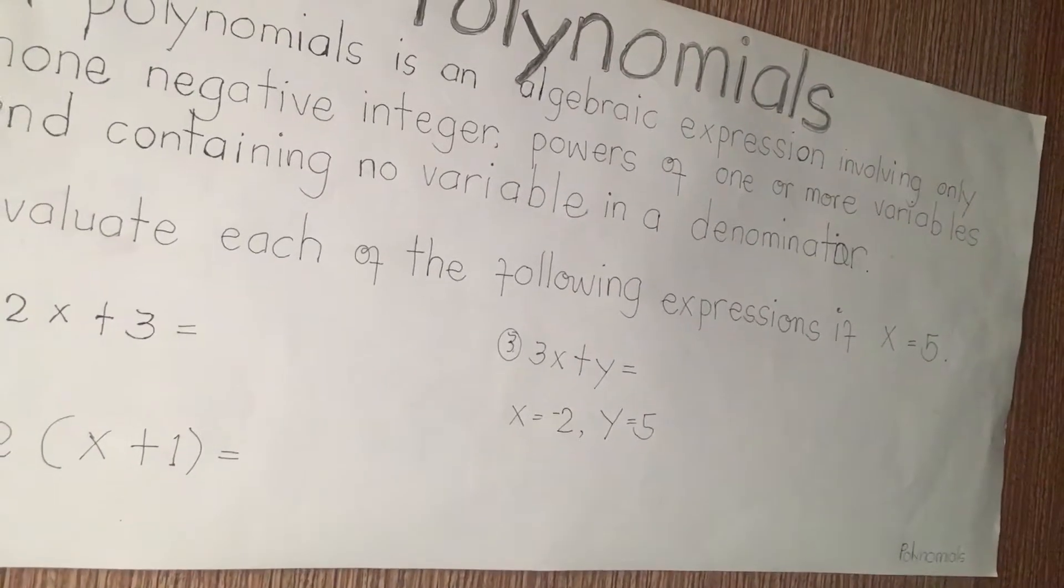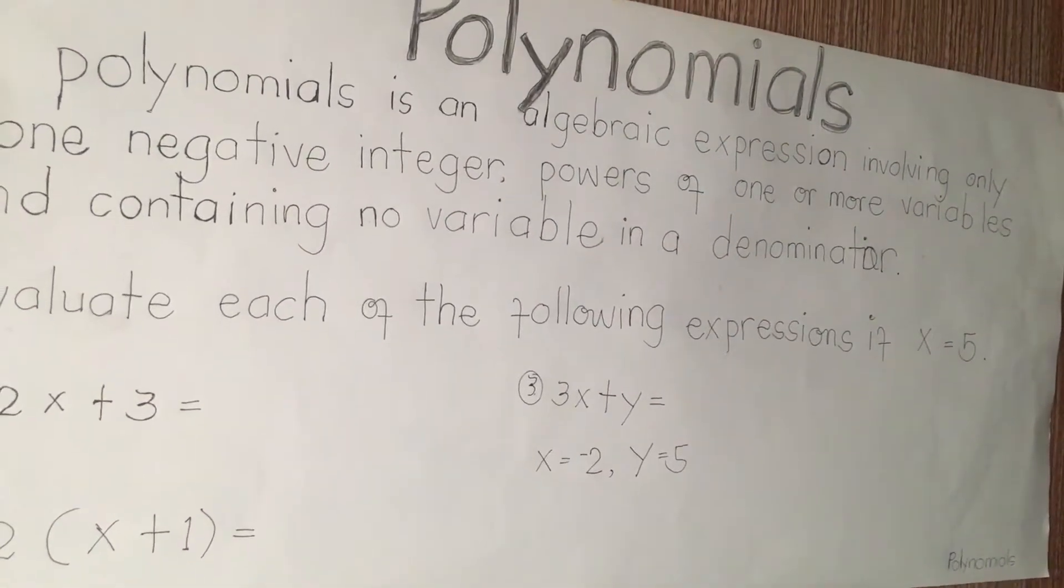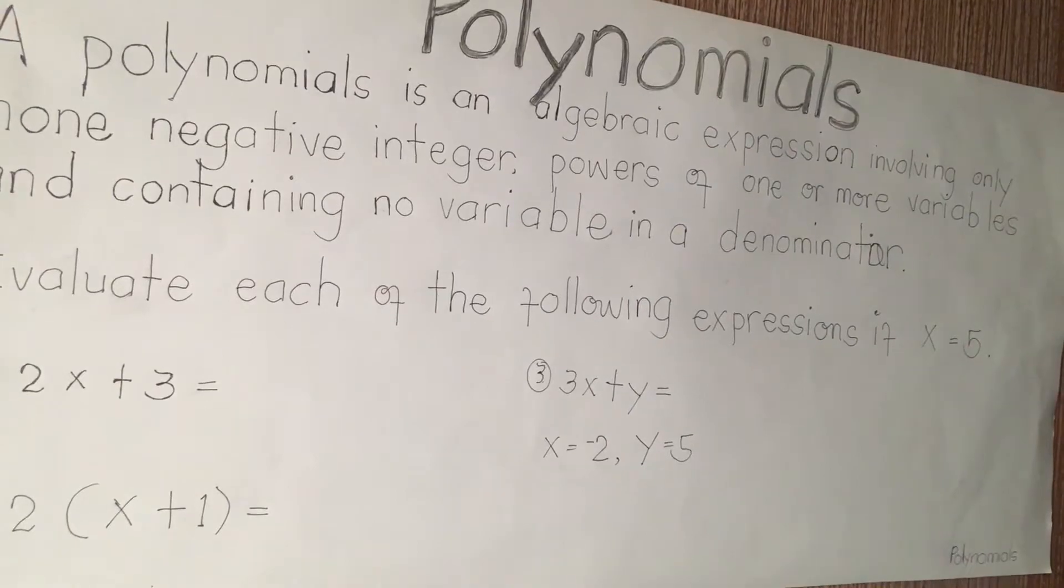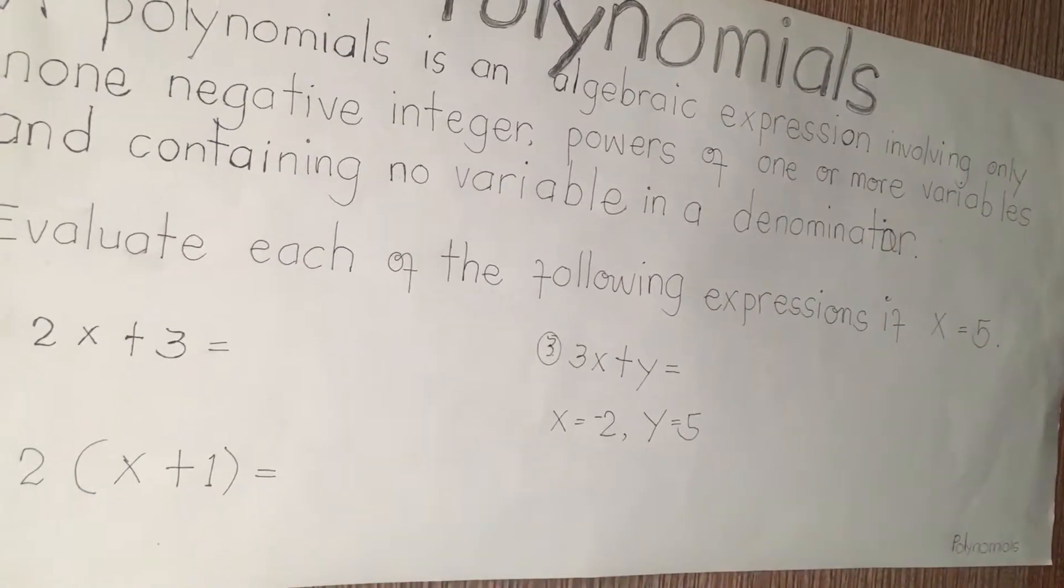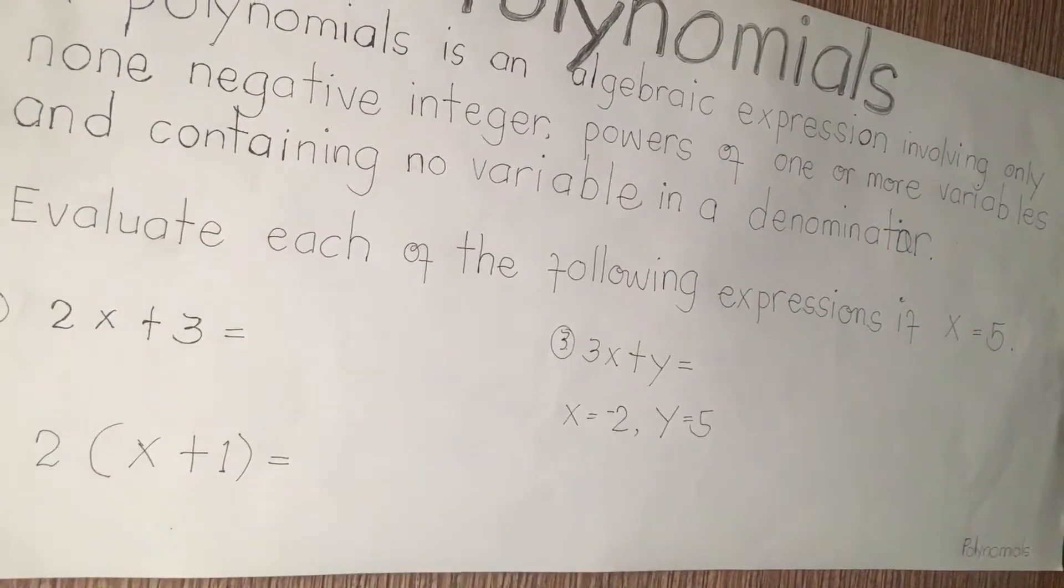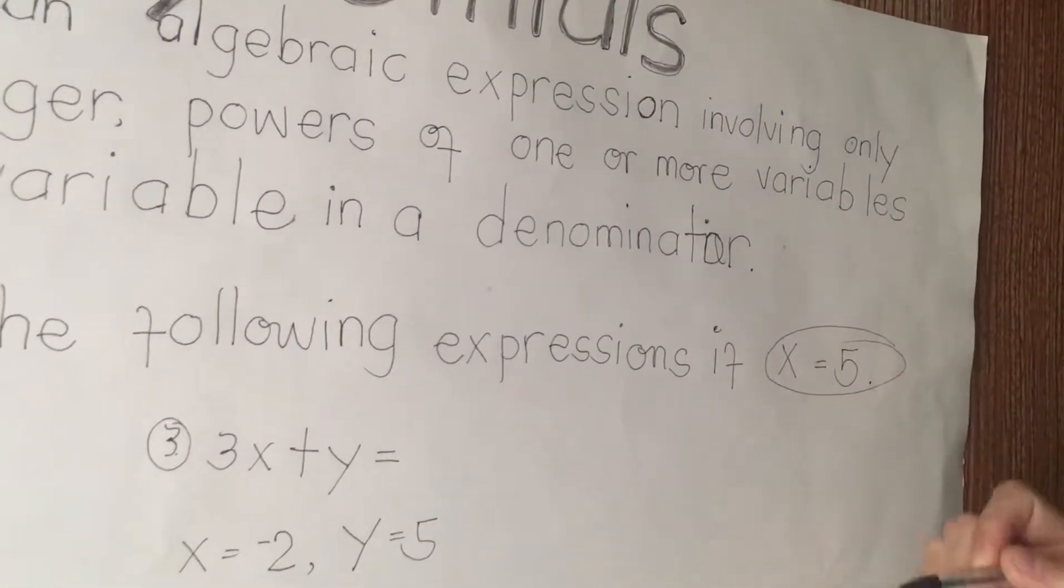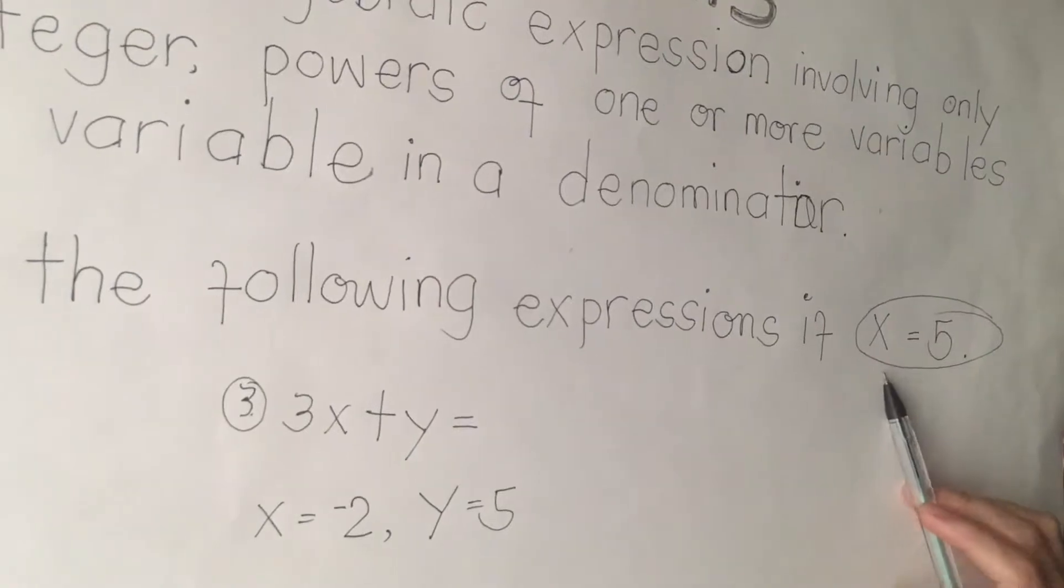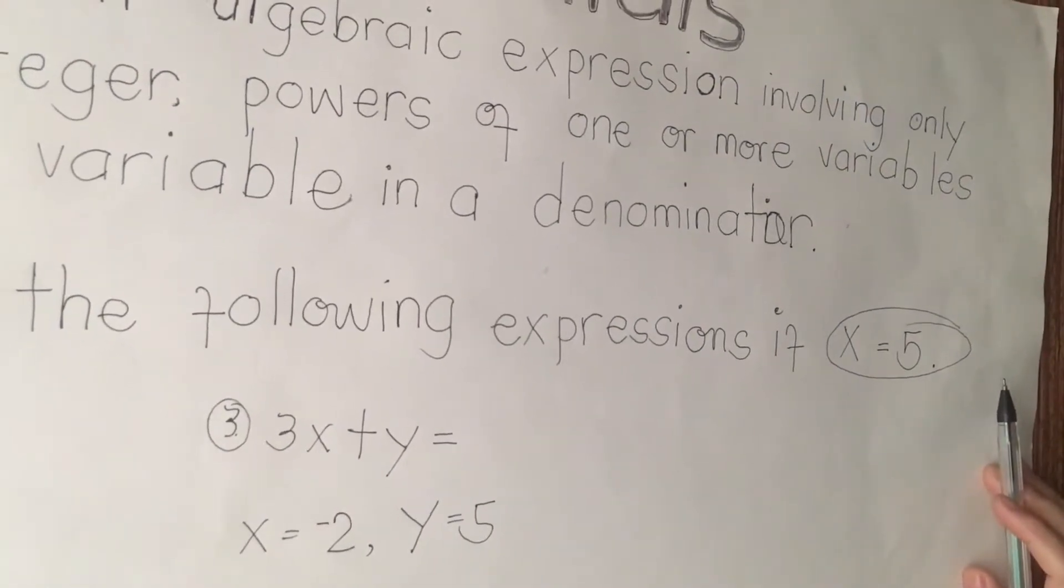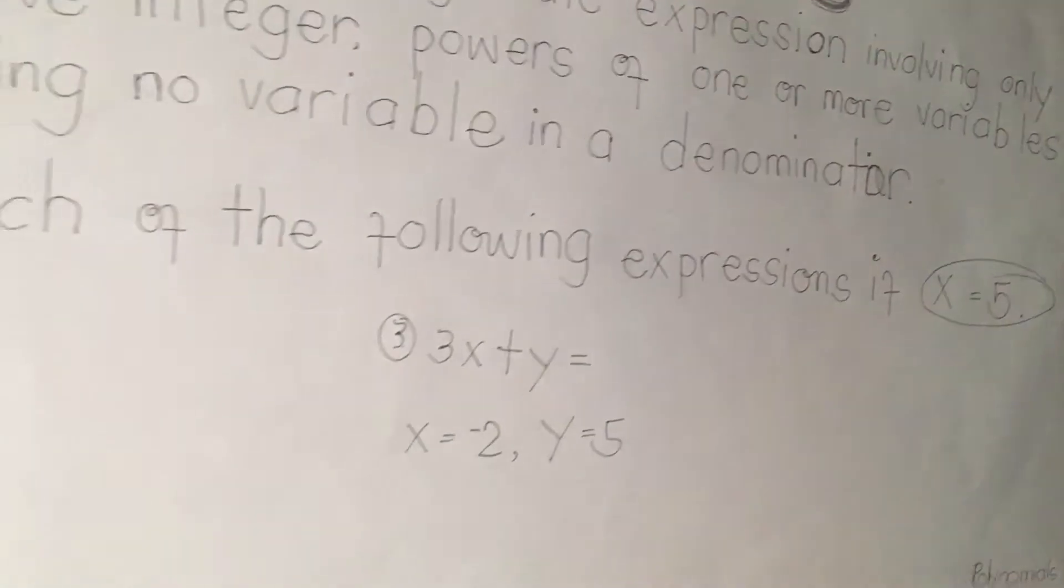And how to solve each one? Simply, we are going to give the value of x. So we're going to unlock first the variable of x, the value of it. We have first the value of x for number 1 and number 2 is x equals 5. Let's follow. We're going to solve it now.